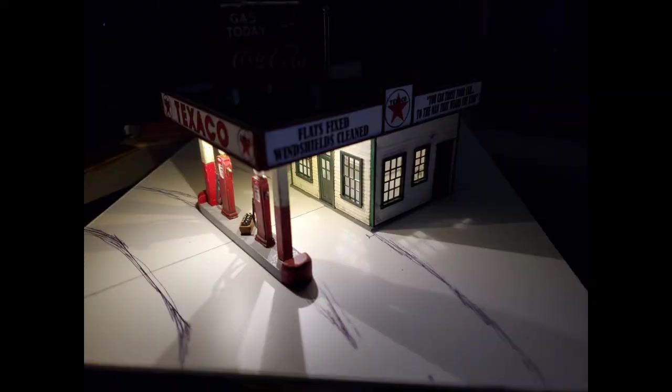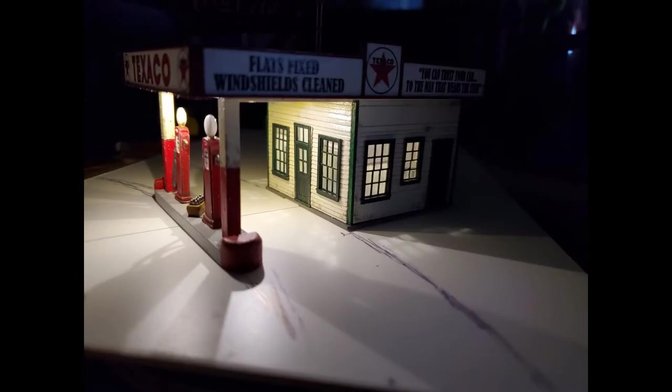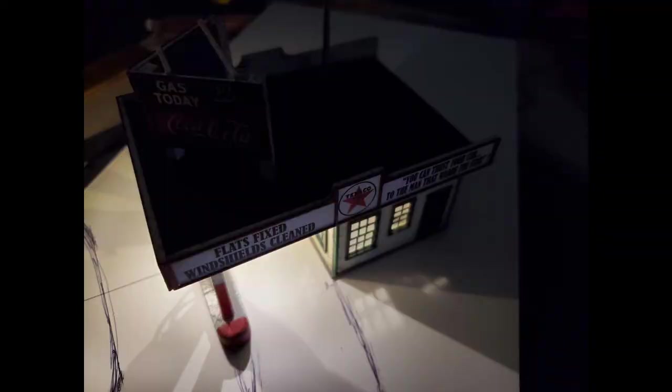To get an idea what the model would look like in a night scene, I turned off the lights and turned on the station's LEDs. As I mentioned earlier, once I get everything on the layout, I'll probably experiment with resistor values to get the illumination for the LEDs right. But at first glance, this looks pretty close.